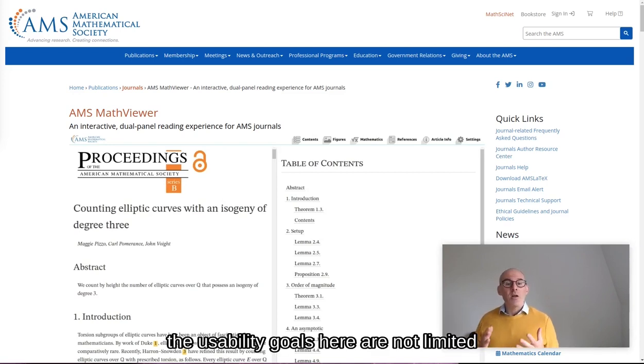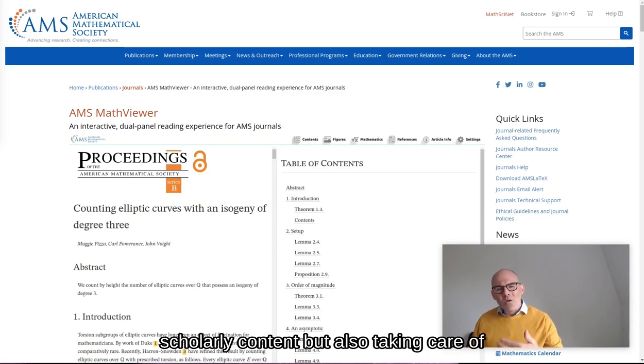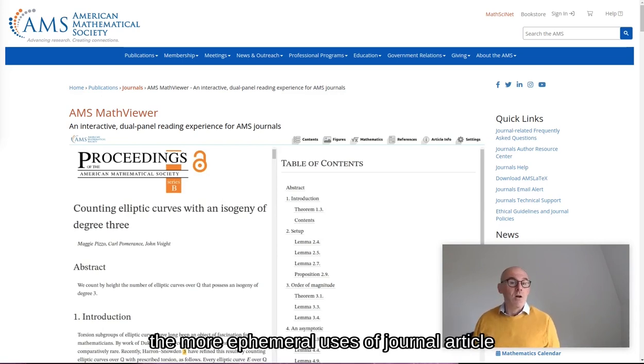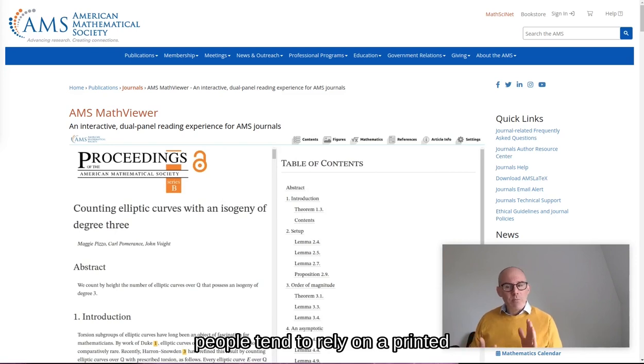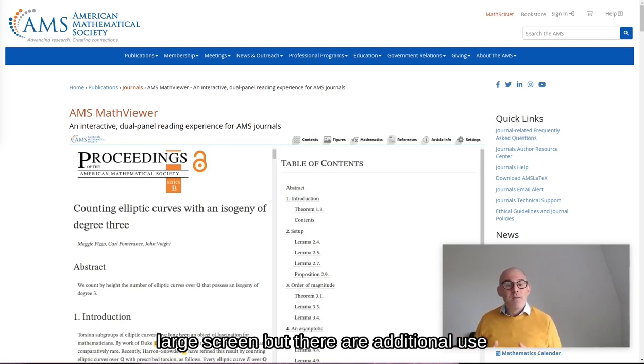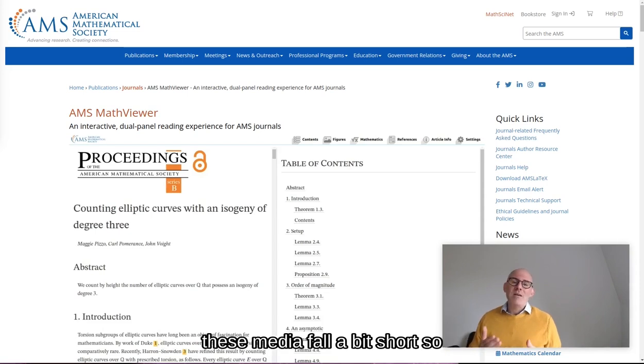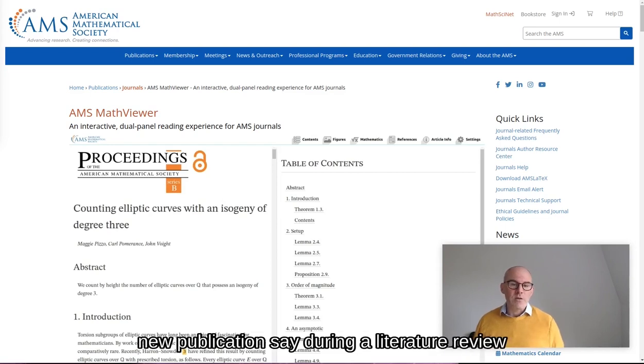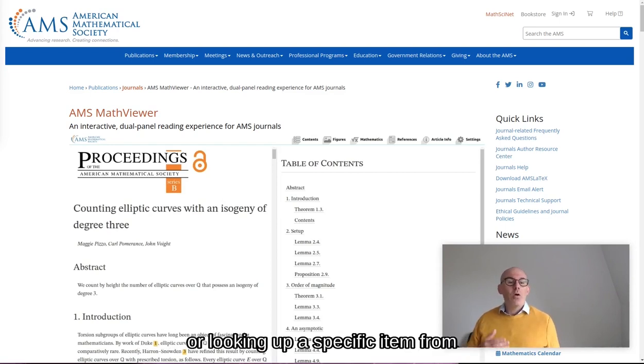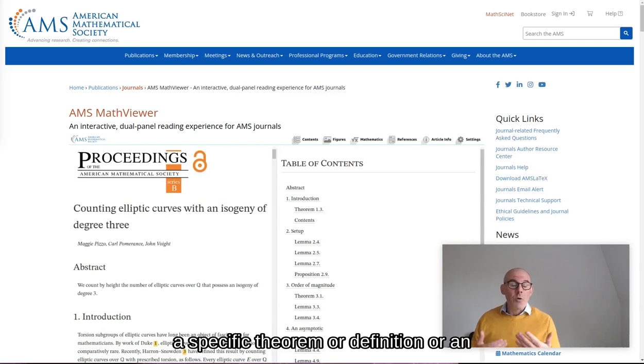The usability goals here are not limited to just traditional long-form reading of scholarly content, but also taking care of the more ephemeral uses of journal article content. We realized that for long-form reading, most people tend to rely on a printed product or maybe a PDF on a large screen. But there are additional use cases that we wanted to address where these media fall a bit short. So a typical example might be the kind of behavior that a researcher or a student shows when they want to quickly browse a new publication, say during a literature review, or looking up a specific item from a reference in another paper that is a specific theorem or a definition or an otherwise important part.